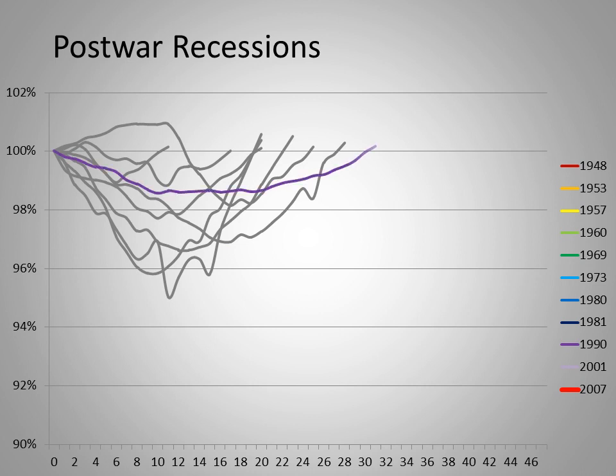Although less severe in its blow to employment, the 1990 recession followed the trend towards longer-lasting downturns. It took 30 months for jobs to recover. The 2001 recession was a little deeper still and dragged on for nearly four full years between employment peaks.